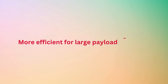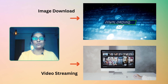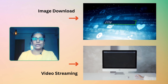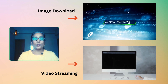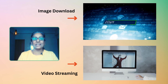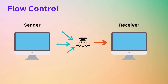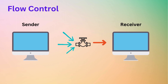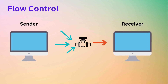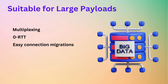More efficient for large payload use cases. HTTP3 is more efficient in use cases involving large payloads such as image downloading and video streaming. The protocol's design is well suited to handle substantial amounts of data transmission, contributing to improved performance in media-rich content environments like Pinterest. HTTP3 has refined flow control mechanisms that allow for better handling of large payloads. Flow control is essential for preventing overwhelming a receiver with too much data at once. Multiplexing, zero RTT, and easy connection migration — along with improved flow control — make HTTP3 highly efficient for large payloads.